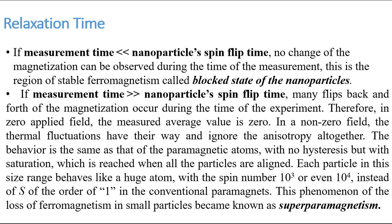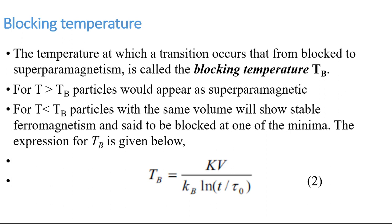This superparamagnetic behavior is the same as that of paramagnetic atoms — with no hysteresis but with saturation — as we already understood in the last lecture. So what is the blocking temperature? The temperature at which this transition from the blocked state to the superparamagnetic state occurs is called T_B.